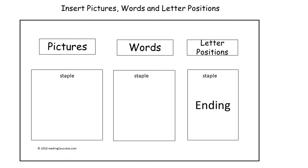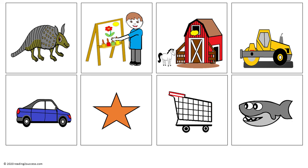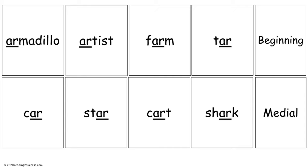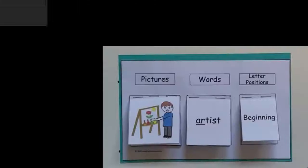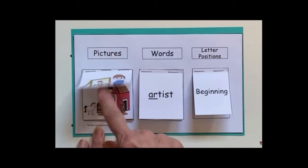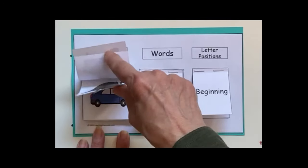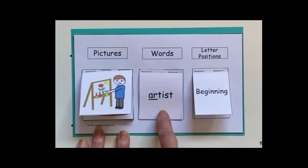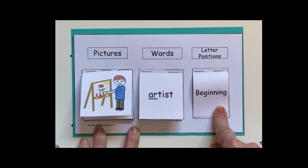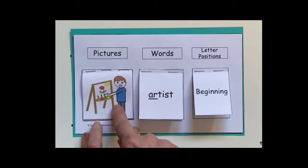These are the three templates needed to make the picture word mat for kids, used in the demonstration lesson. Now have kids work with the picture word mat. In the first category we have all pictures with the A-R R-Controlled Vowel, then the matching words, and then where the A-R is found in each word.